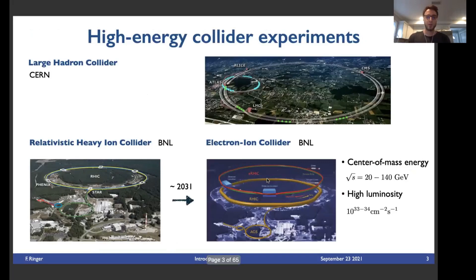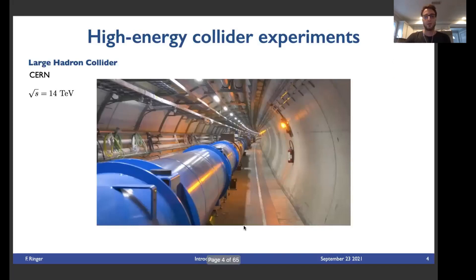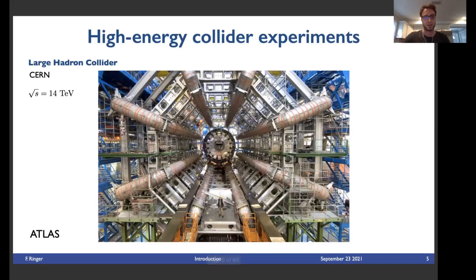The way to do this experimentally is through high energy collider experiments. A lot of progress in jet physics has been made over the last years in the context of the LHC. Jets have also been measured at the relativistic heavy ion collider at BNL, and even more so at the future sPHENIX experiment. And then, of course, the electron ion collider, which will be built in about 10 years from now. Since I don't have images from the EIC yet, let me show some from the LHC. Particles are accelerated to very high energies — up to 14 TeV — and brought to collisions at experiments such as ATLAS.